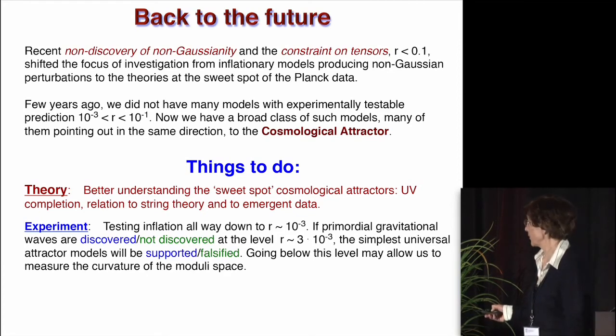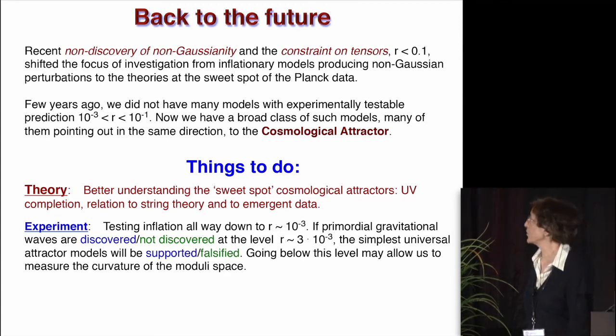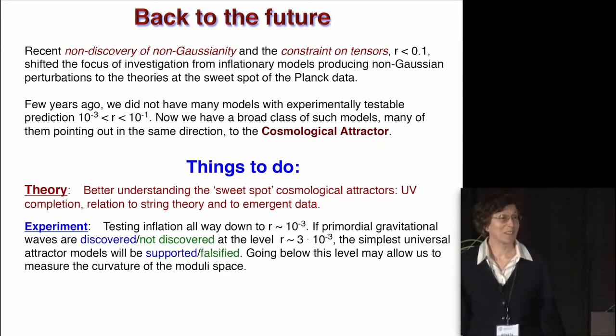And so here I'm making a following statement. If primordial gravitational waves are discovered or not discovered at the level of r, which is 3×10^-3, the simplest universal attractor models will be supported or falsified. And going below this level may allow us to measure the curvature of the modular space, which would be really, really interesting. And I can only add that people who actually do the B-mode experiment, they say we'll get there. And so we'll see what will happen. Thank you.